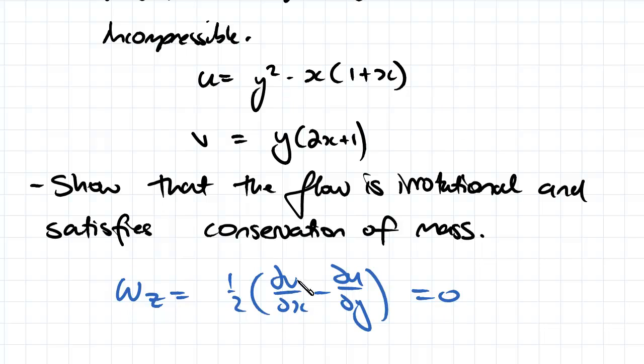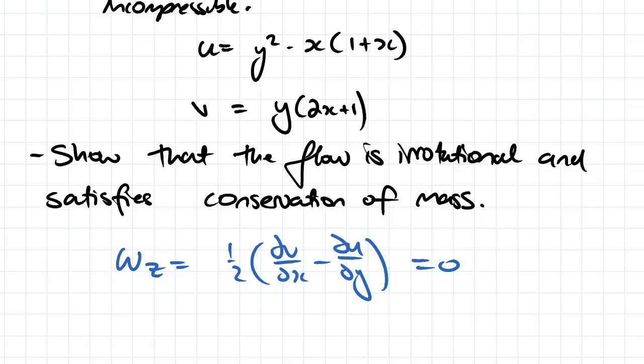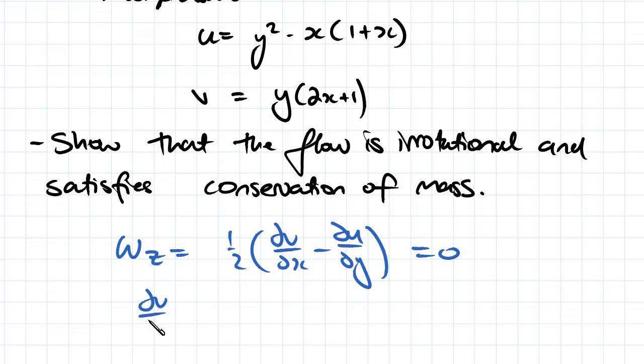So all we really need to do now is determine what dv/dx is and what du/dy is. So dv/dx simply is just going to be equal to 2xy. Differentiating that is going to give us 2y.